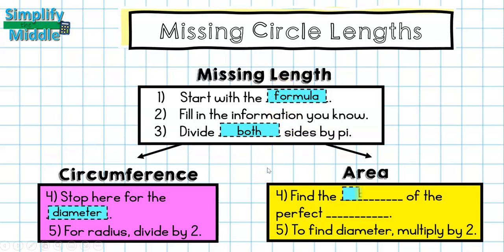For area, I follow the same first three steps. And for my fourth step, I have to find the base of the perfect square. Remember, we're not dividing by 2. We're finding the base of the perfect square. And then finally, if it asked me for diameter there, I would multiply by 2.